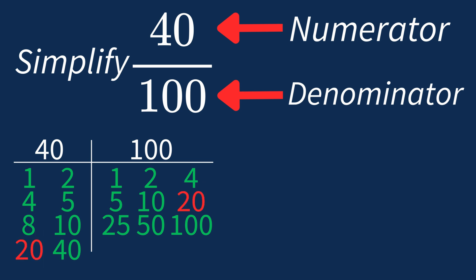This means we can divide both the numerator and denominator by 20 to simplify the fraction.